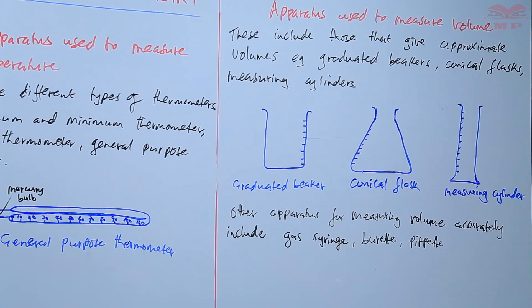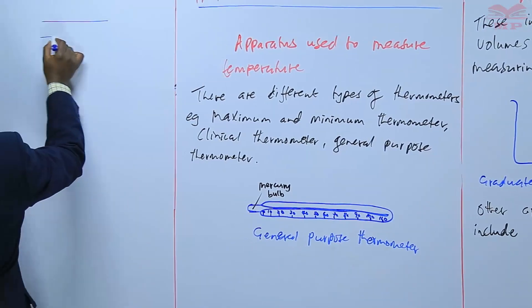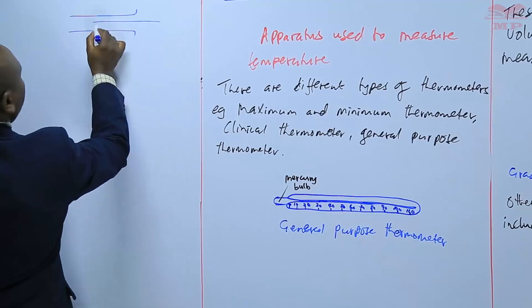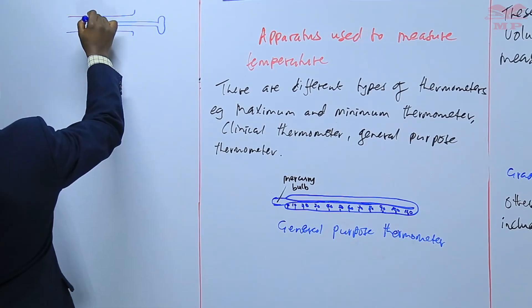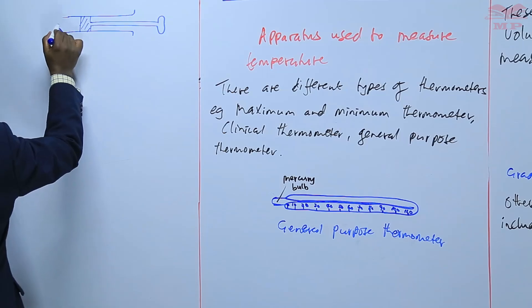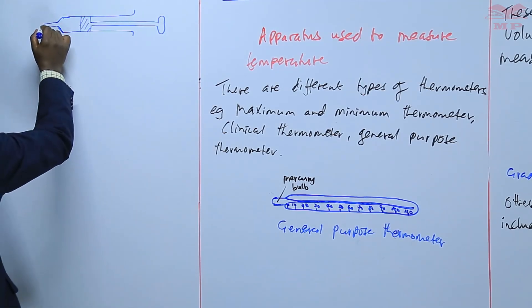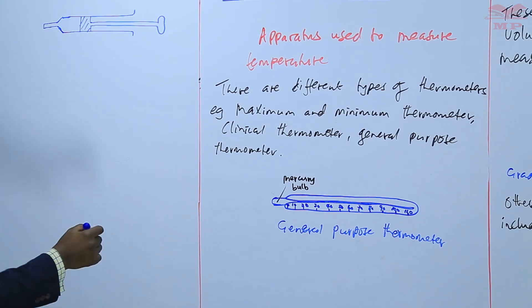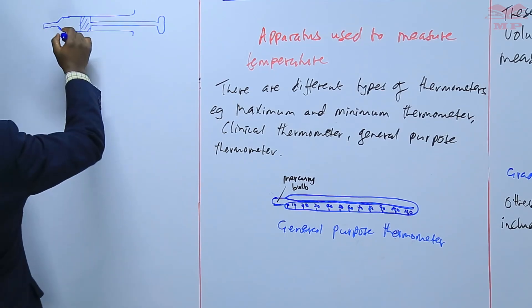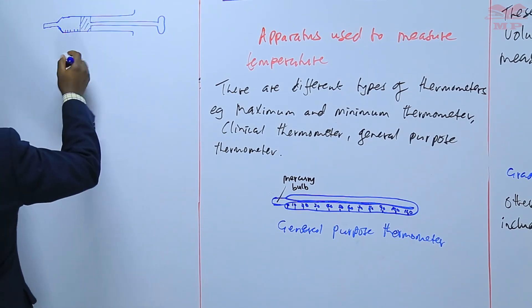So we are going to have a diagram of each. We have a syringe, also has calibrations for measuring different volumes.